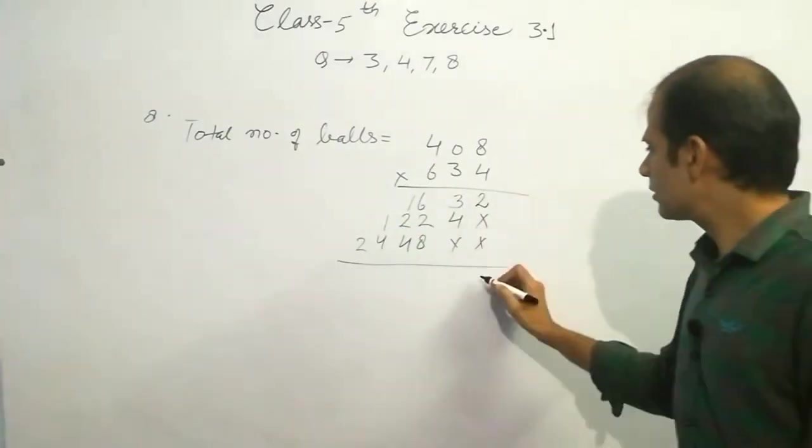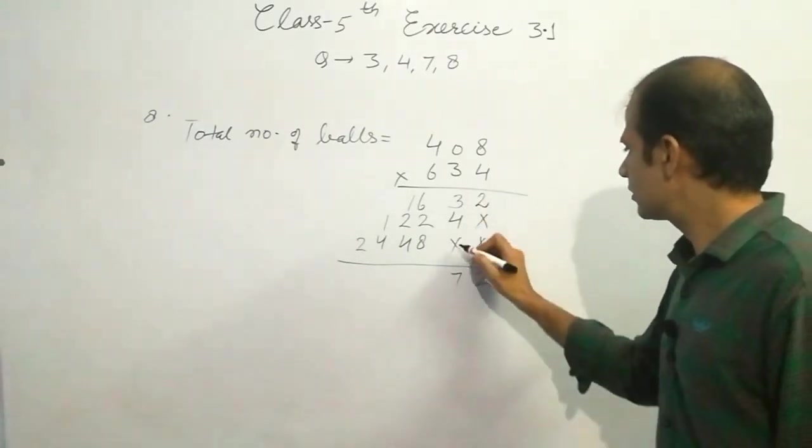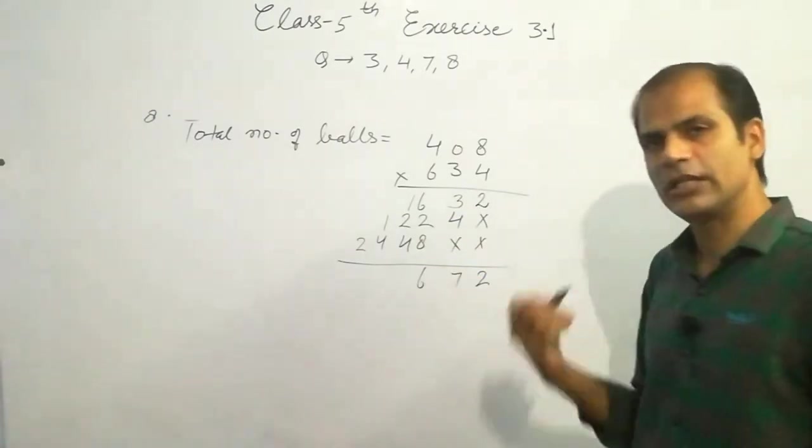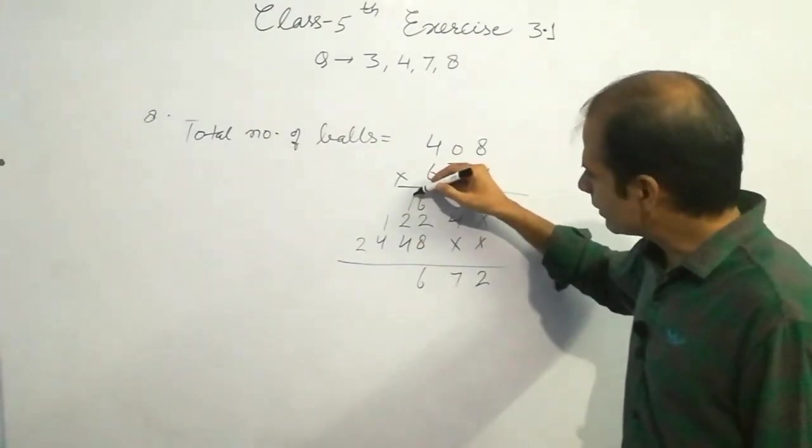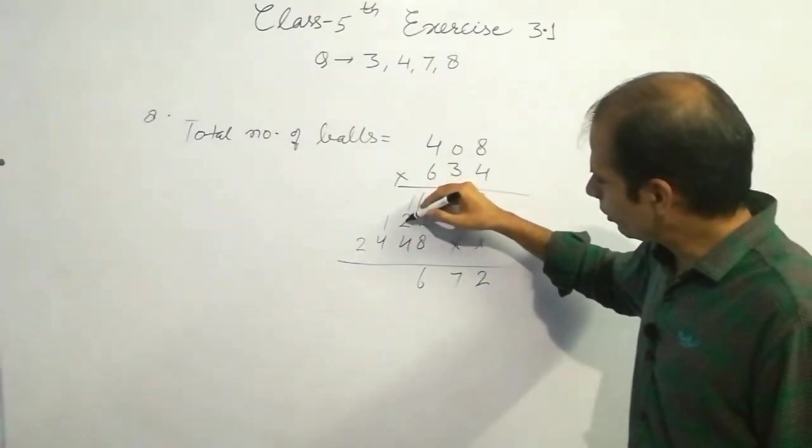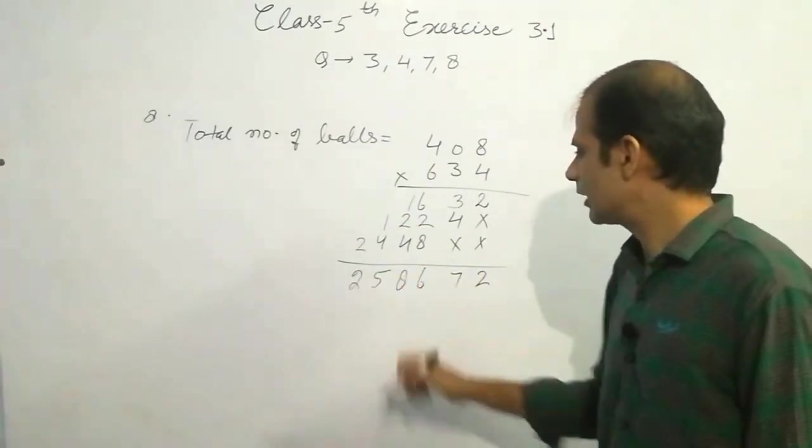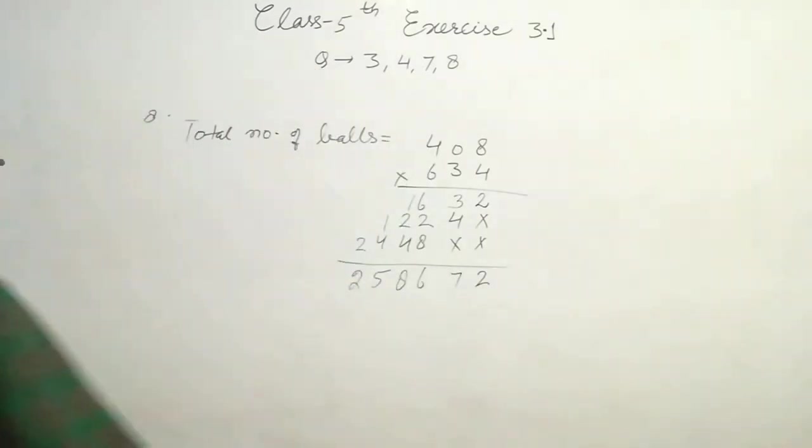Add the numbers. It is 2. It is 7. 6 plus 2, 8. And plus 8, 16, 1 carry. That is 1 plus 1, 2. 2, 4. And 4, 8. 1 plus 4, 5. And that is 2. So the answer is 2 lakh 58,672. It is the answer of question number 8. 2, 5, 8, 6, 7, 2.